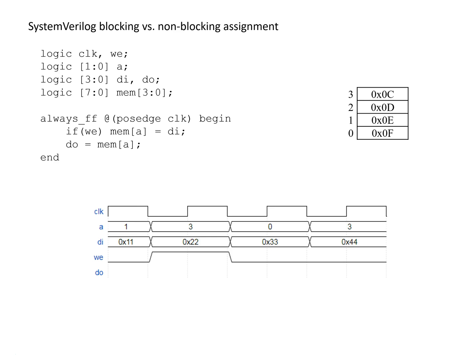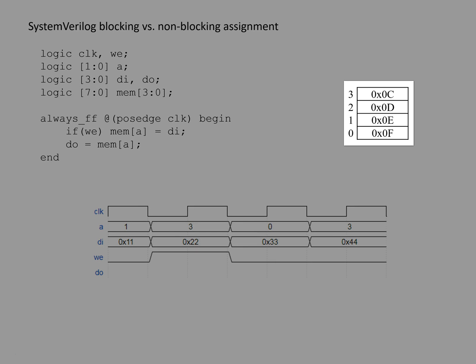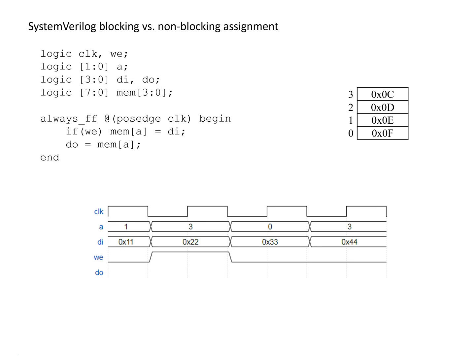To make this concrete, we have an example where we've got a four-entry array and we've specified some values that are in there at the start. To begin with, we're going to be looking at a case of blocking assignment — you can tell this because we've got a standard equal sign here, which is the blocking operator in Verilog.